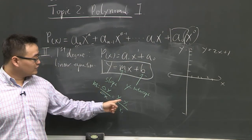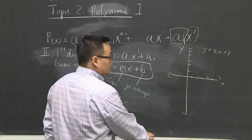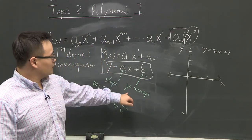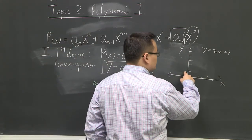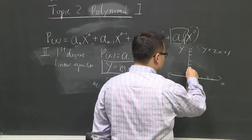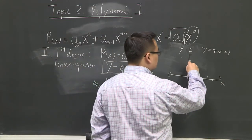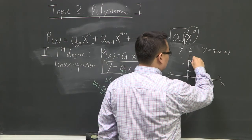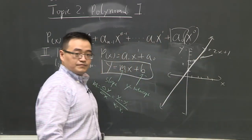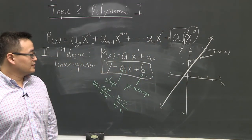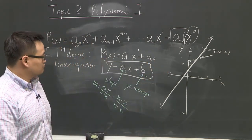If the y-intercept is 1, that's your first point. Your slope is 2, so go up by 2 and across by 1 — that's your next spot. Draw your line and you're home free. This is your slope-intercept equation. Really simple, really quick.